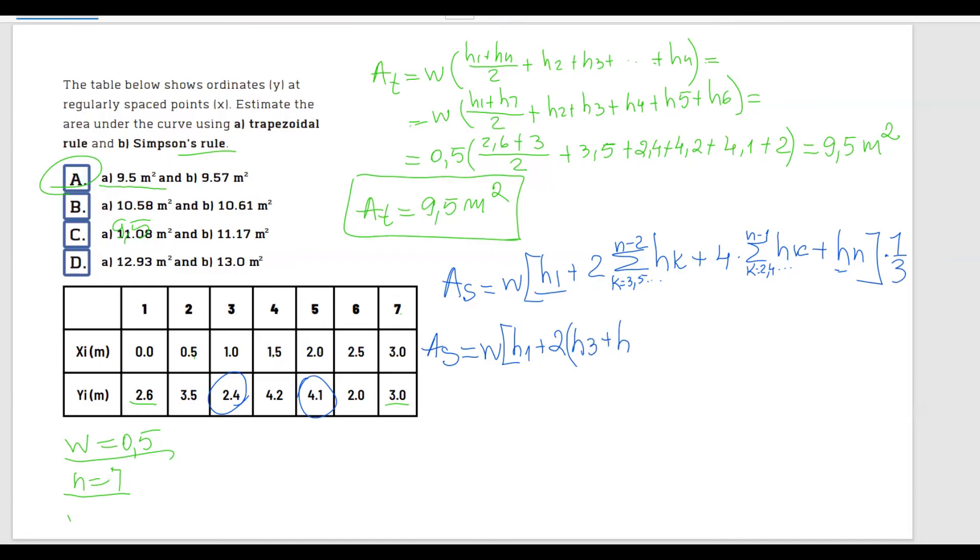Plus 4 multiplied by the next three ages with an even number, which is h2 plus h4 plus h6, and plus h7, multiplied by 1 over 3.